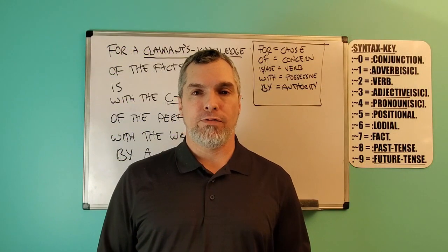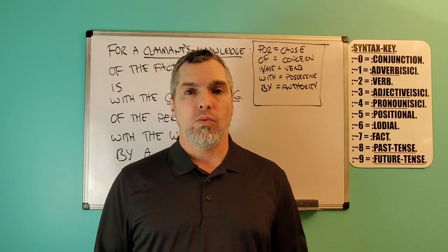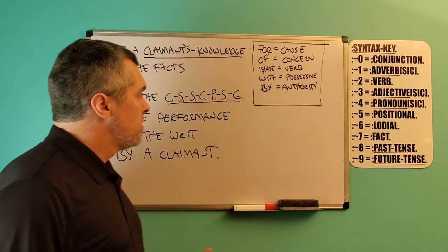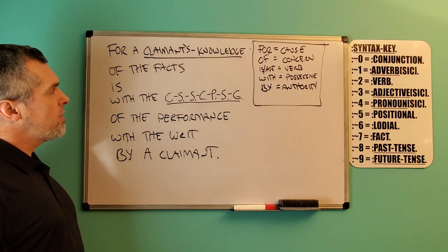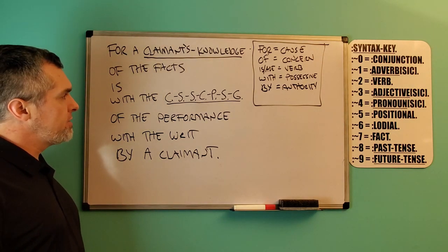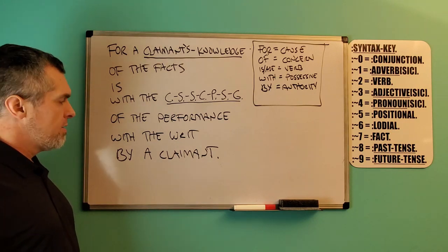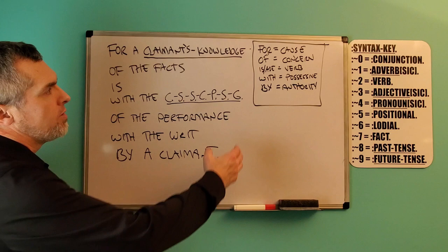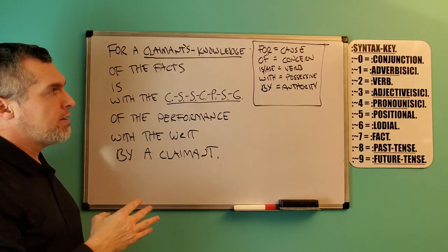In this part of the video, I'm going to go into more depth using an example: 'For a claimant's knowledge of the facts is with the correct sentence structure, communication, parsely, syntax, grammar of the performance with the writ by a claimant.' These positionals — there are four positionals: for, of, with, and by.